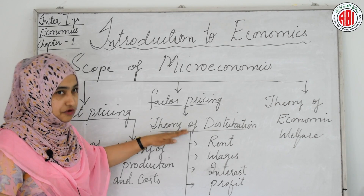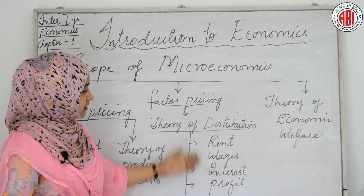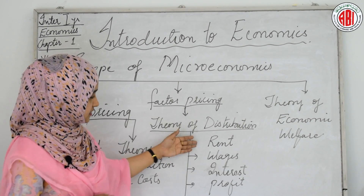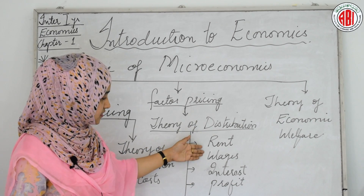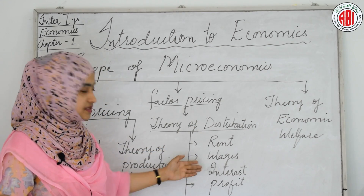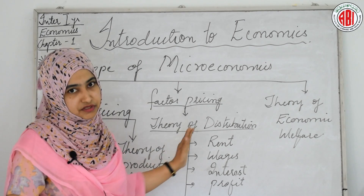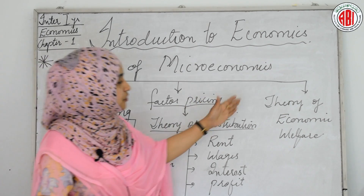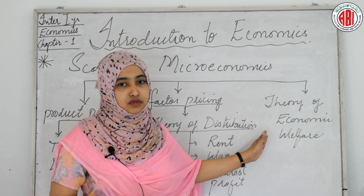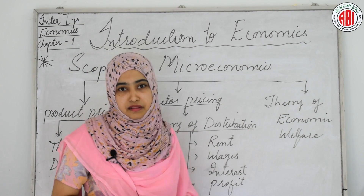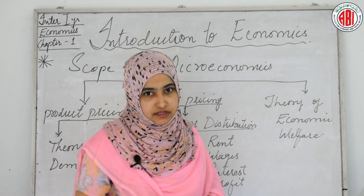Under the theory of distribution, the factors are rent, wages, interest, and profit. The theory of economic welfare also comes under the scope of microeconomics.